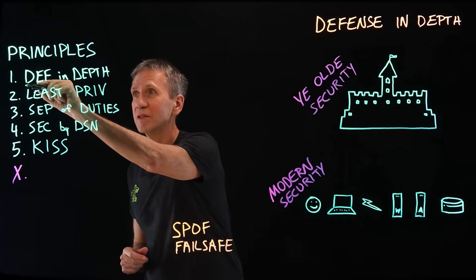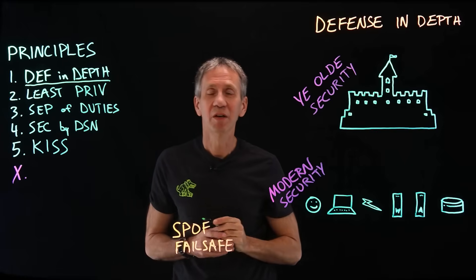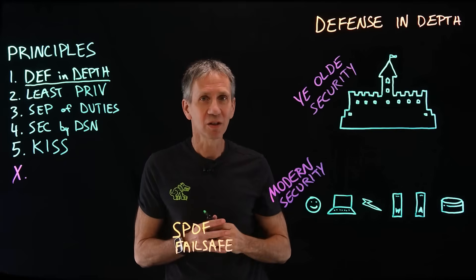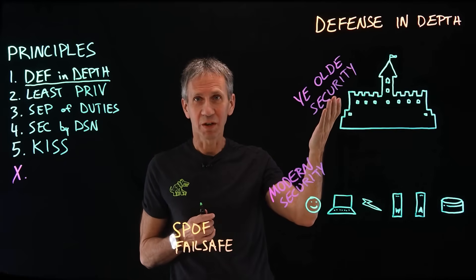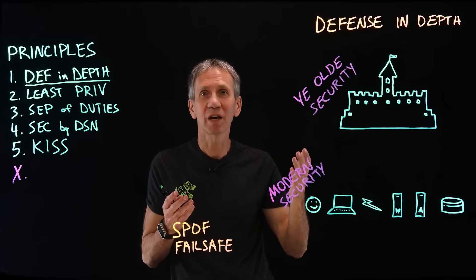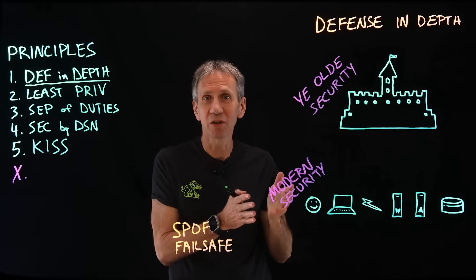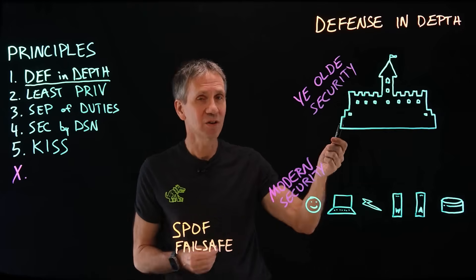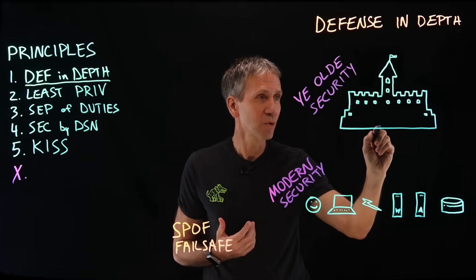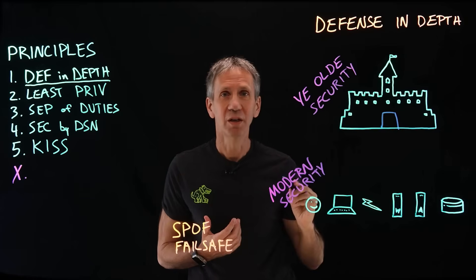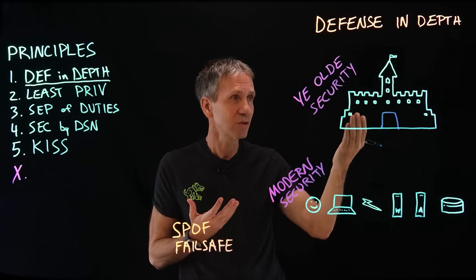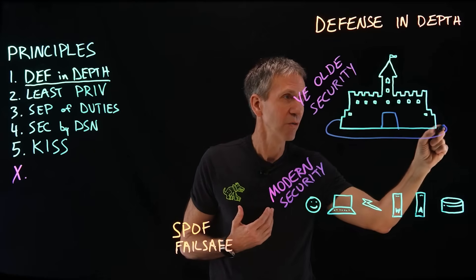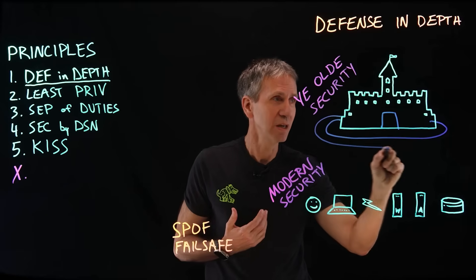The first one is defense in depth — trying to create an obstacle course, a difficulty for the bad guy. If we take a look at an old security model, the castle: it was designed with thick, tall walls to keep the good guys on the inside and the bad guys on the outside. It worked pretty well until the good guys needed to come out, so we needed a door — which became a vulnerability — and then we added a moat around the whole thing to make it even harder.